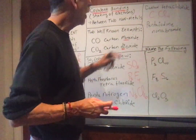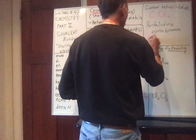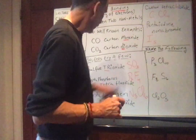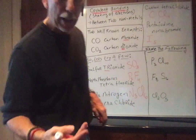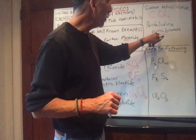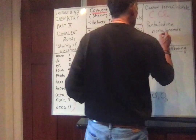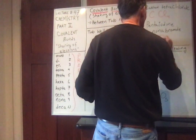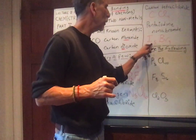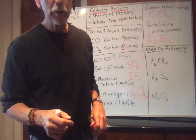Pentaiodine: penta is five, so I5. Nonabromide: nona is nine — not 'nonna,' which would be grandmother in Italian — this is nine bromides, so Br9. Pentaiodine nonabromide. Very, very simple.